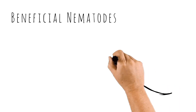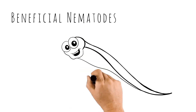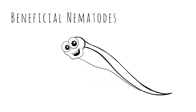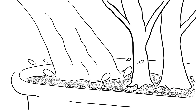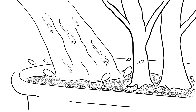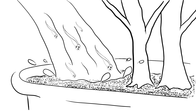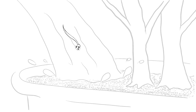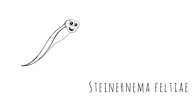Beneficial nematodes are an entomopathogenic roundworm parasitic to over 200 soil-dwelling pests, including fungus gnat larvae. Applied into the soil through water, beneficial nematodes are a cost-effective way to limit infestation levels and stop the pest life cycle. They will not affect people or plants. For targeting fungus gnats, use Steinernema feltiae beneficial nematodes.